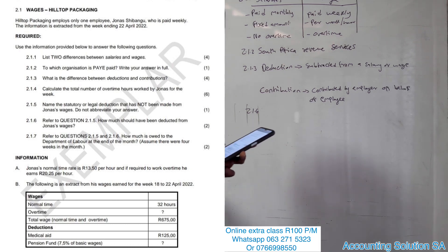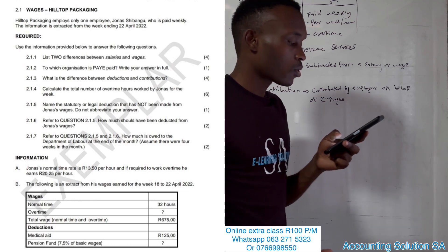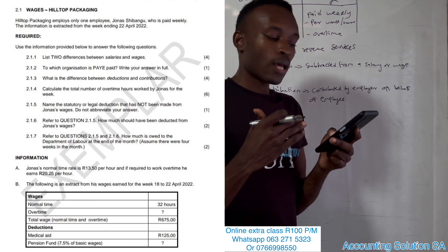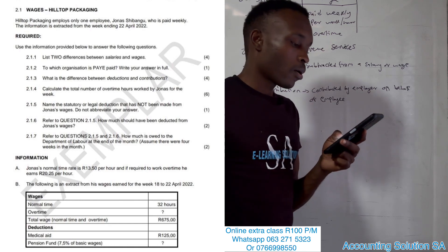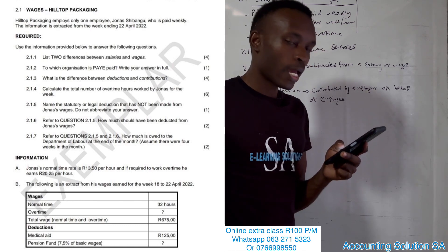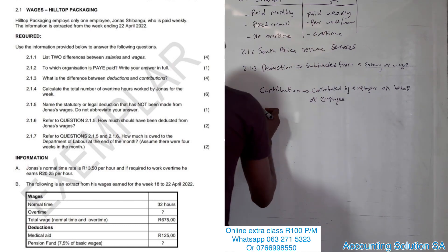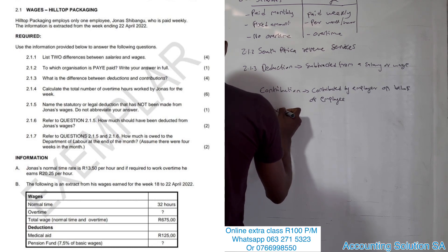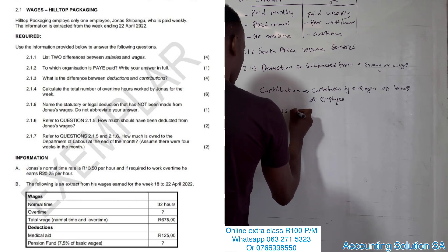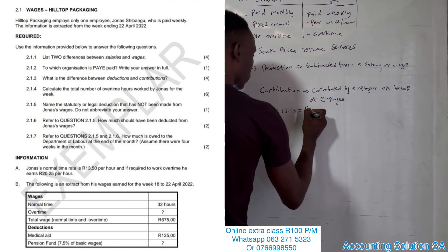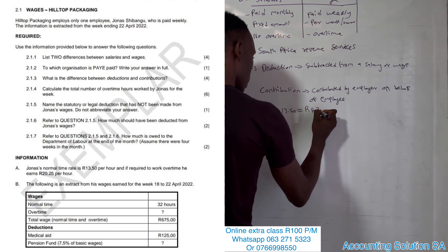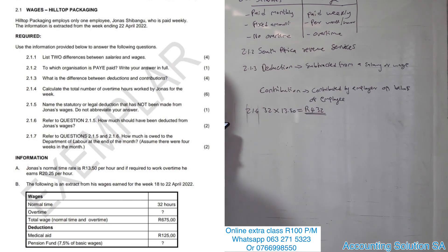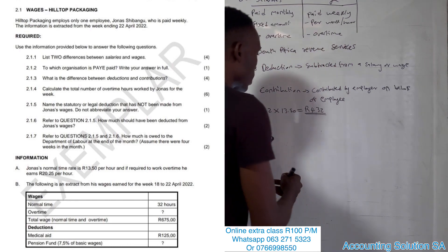To get the overtime hours we calculate it as a balancing figure, but we can't do that directly because normal time gives us hours while total is given in rand. So we must first get the rand value for normal time. He worked 32 hours multiplied by the rate of R13.50 for normal time, which gives us R432. This is the normal time amount. The total is R675, so we calculate overtime as the balancing figure: R675 minus R432 equals R243.